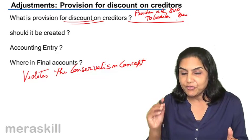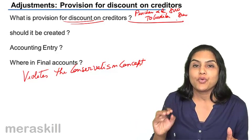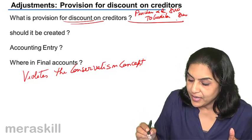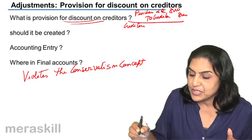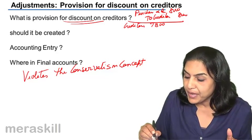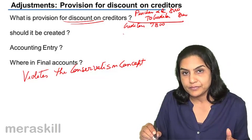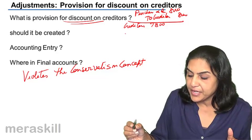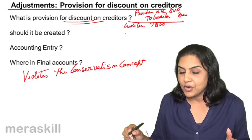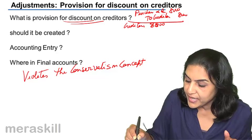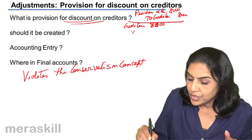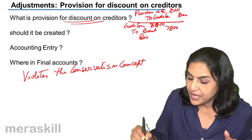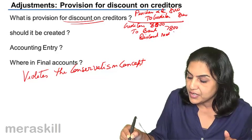We are told that if we make a payment within two weeks, we will get a discount of 200 rupees. So we decide to make a payment early — we pay the creditors, but we need to pay only 7,800, and the remaining 200 is actually a discount income — discount received of 200.